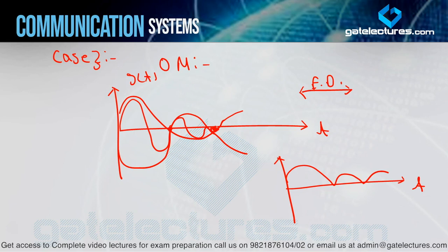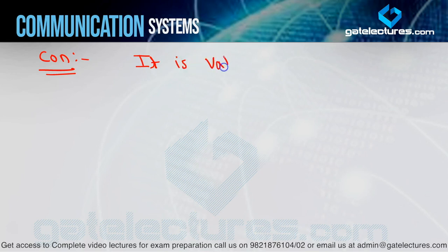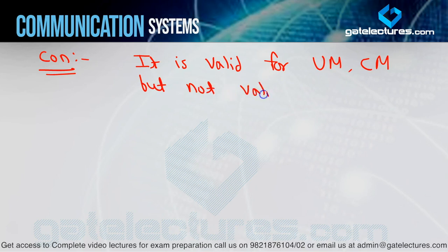So the conclusion from the last three slides: the envelope detector is valid for under modulation and critical modulation, but not valid for over modulation. For over-modulated waveforms, you cannot use the envelope detector.